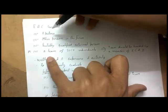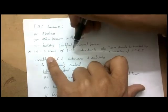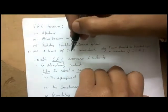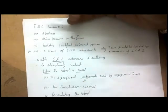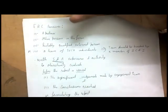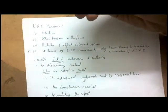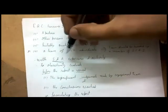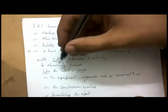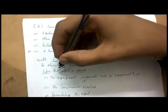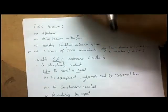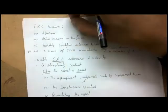The EQCR — whether a partner, person within the firm, suitably qualified external person, or team — must have sufficient and appropriate experience. This is essential because they are reviewing performance and assessing whether quality has been maintained. They must have sufficient and appropriate experience and authority to objectively evaluate, before the audit report is issued, the significant judgments the engagement team made and the conclusions reached in formulating the audit report.